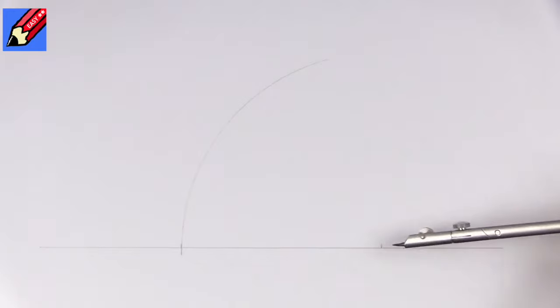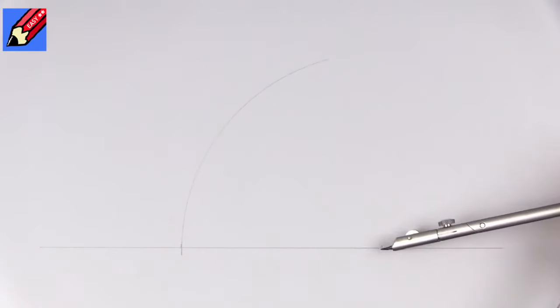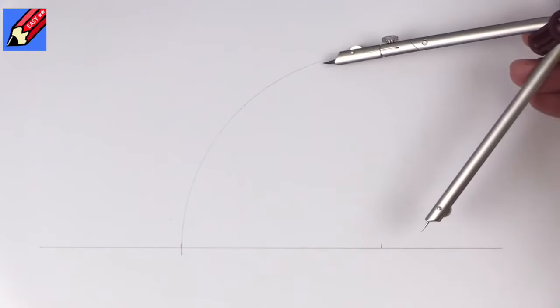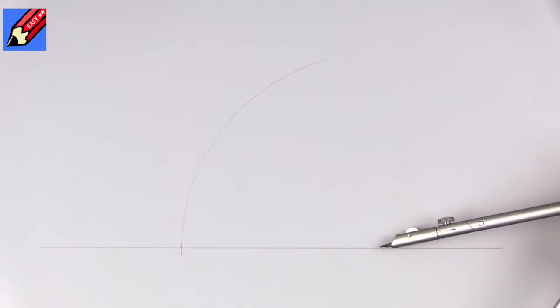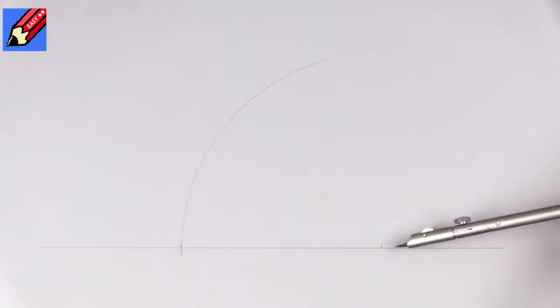Every point along that arc is exactly 10 centimeters away from that point there. So a point there is 10 centimeters, so is a point there and a point there and a point there. Anyway, it's 10 centimeters from that point.